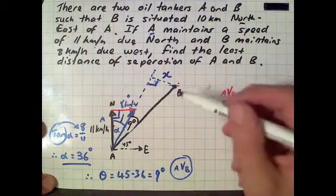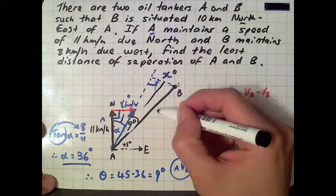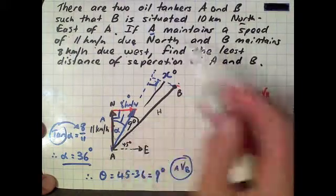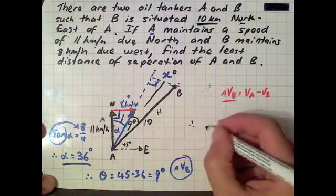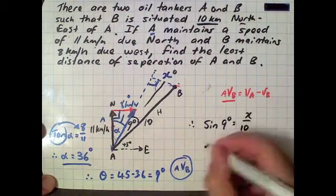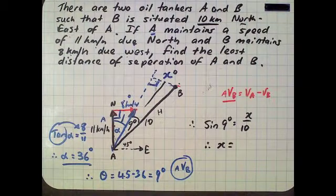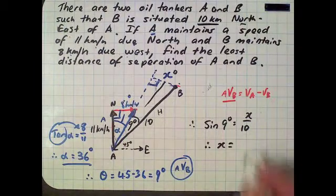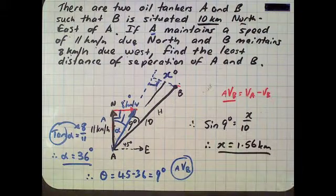Now we use trig again. That's going to be the opposite side and the hypotenuse. The distance from A to B was 10 kilometers. So we have sine of 9 degrees equals x over 10. Rearranging, x equals 10 times sine of 9 degrees. We get out the calculator and we get x equals 1.56 kilometers. That's the least distance of separation between the two oil tankers.